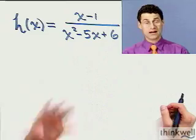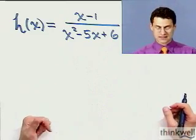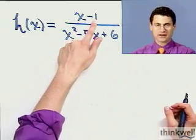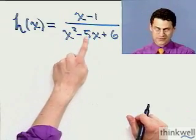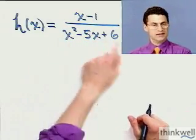There's the function. I want to find the domain, all the allowable x's. Take any number x, if you subtract 1, that's a completely fine number. Take any number x, square it, subtract 5 times itself, and add 6, that's a completely fine number.